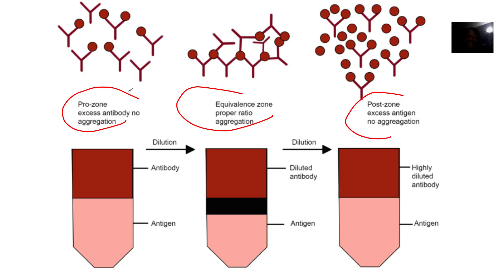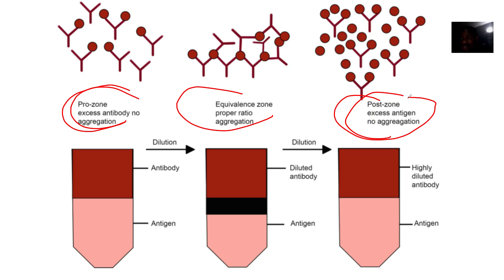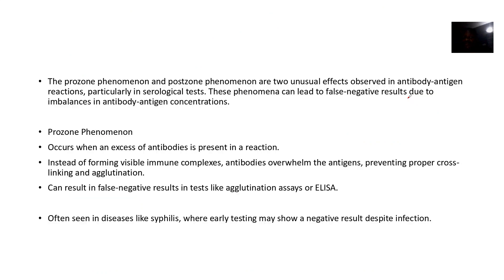Prozone is too much antibody. Postzone is excess antigens, so that means the antigens dilute the antibodies too much for a reaction to actually occur.